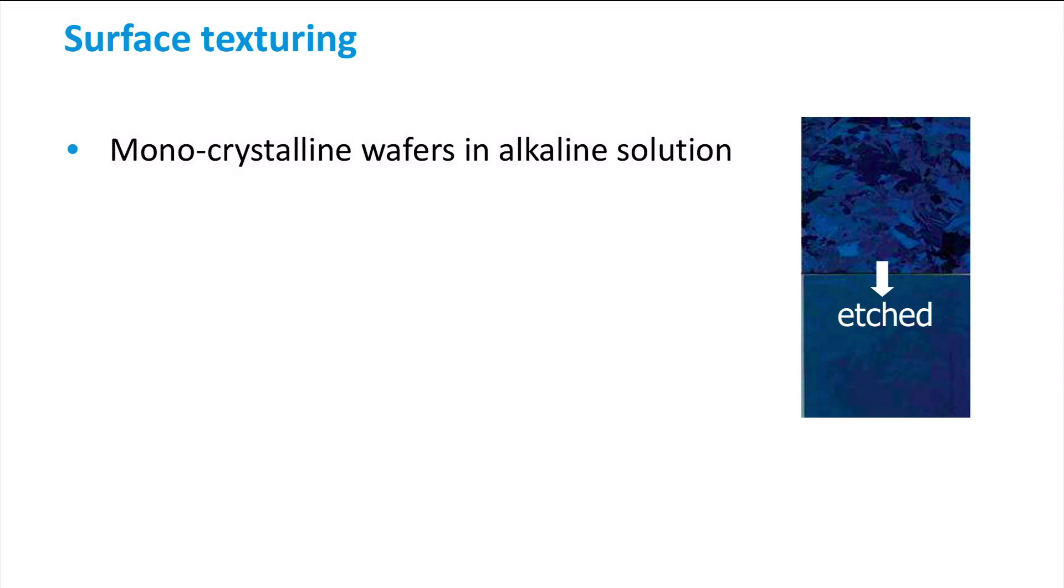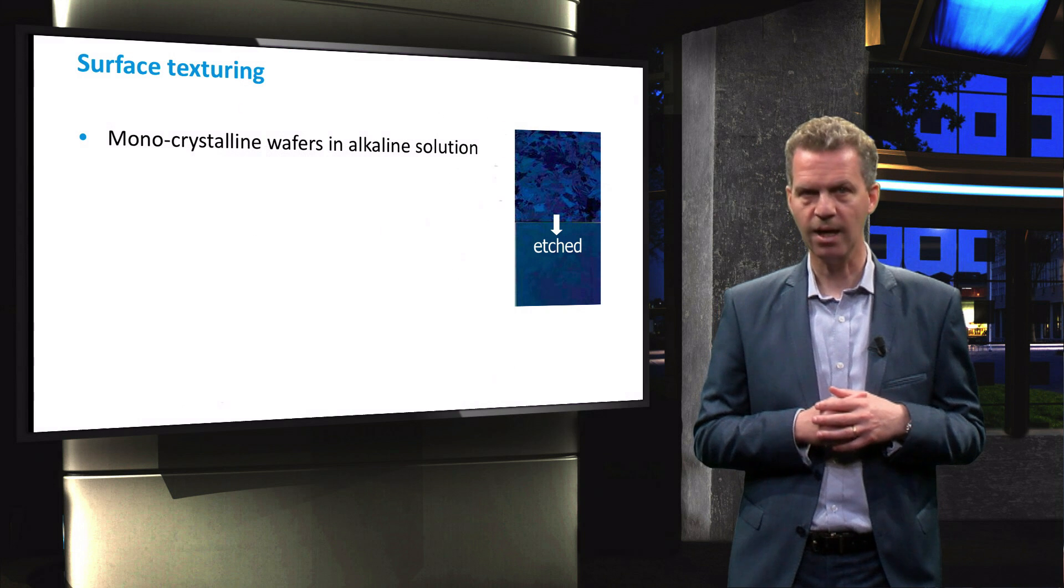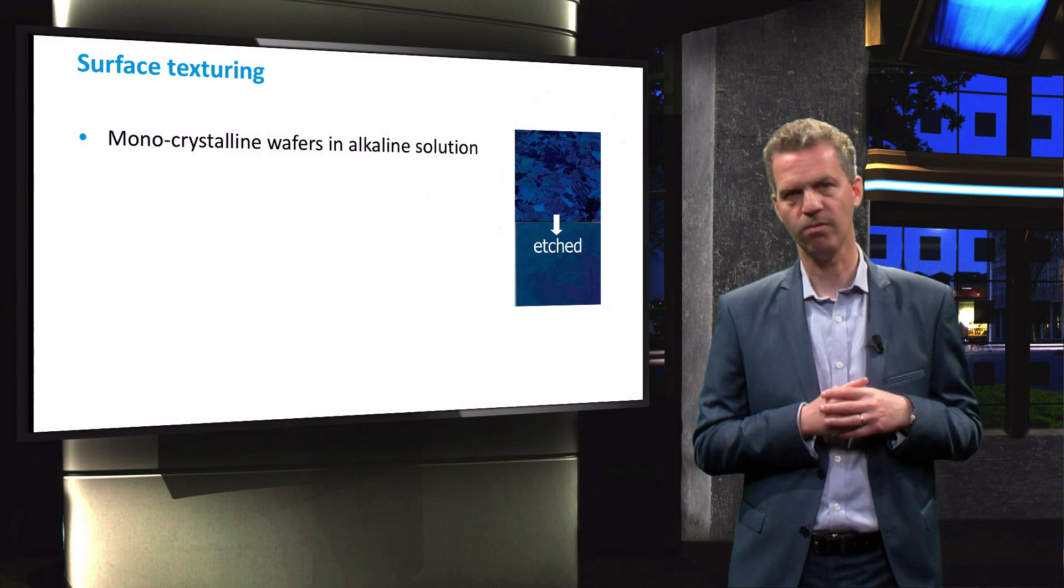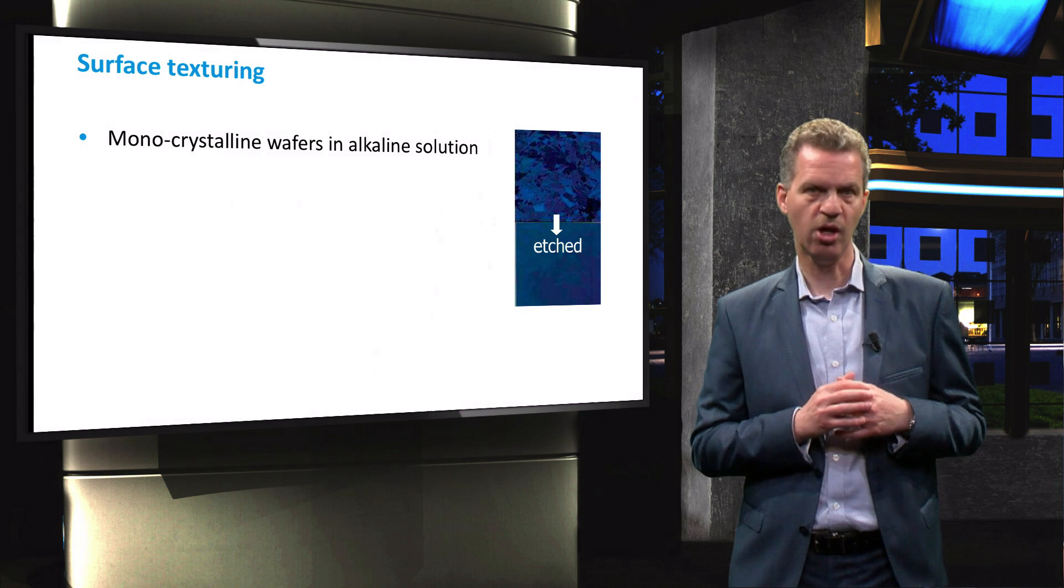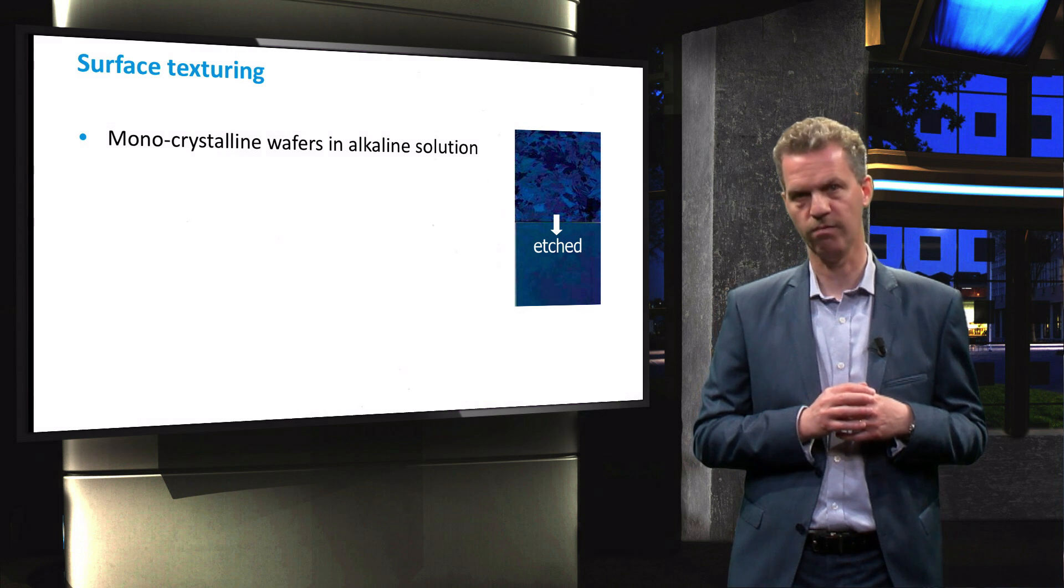A surface texture on monocrystalline silicon wafers is obtained by using a strong alkaline solution and submerging the wafers for a set amount of time. The solution will etch away material such that it will get a dull appearance, resulting from a reduction in reflectivity of the surface.